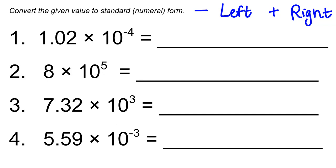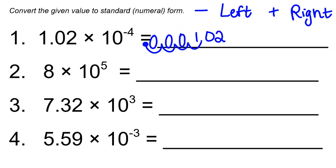In this first problem we have a negative exponent, so we move the decimal point to the left. Starting with 1.02, we move it one, two, three, four times to the left. Our decimal point now goes here, and in all the blank spaces that don't have digits we fill in zeros — we call those placeholder zeros. So we have 0.000102 — that is our final answer.